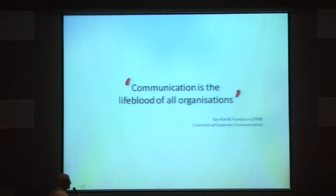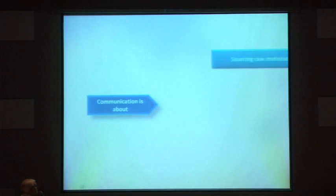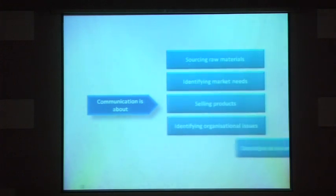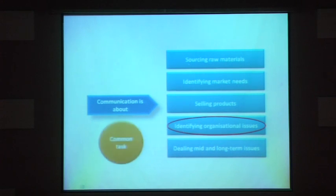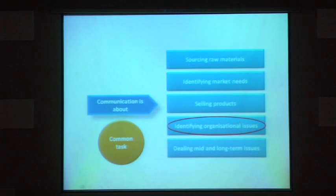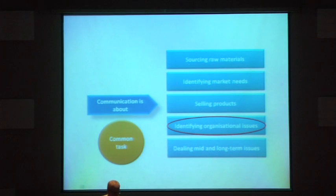Van Riel and Fromben tell us that communication is the lifeblood of all organisations. Communication is about sourcing raw materials, identifying market needs, selling products, identifying organisational issues — either those in the marketplace or those in a longer time frame — and dealing with mid- to long-term issues. A common task, whether we're marketing communicators or strategic communicators, is to identify a bunch of issues that apply to our organisation in a given situation.